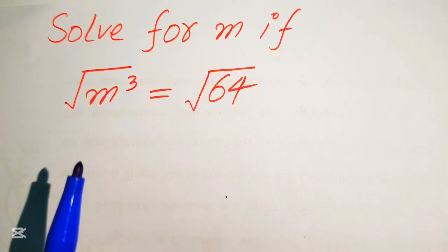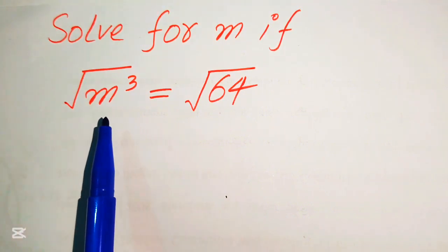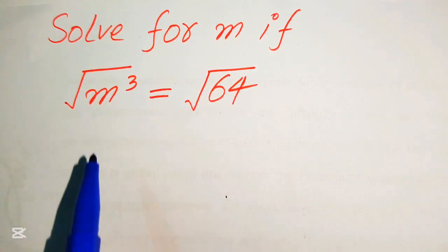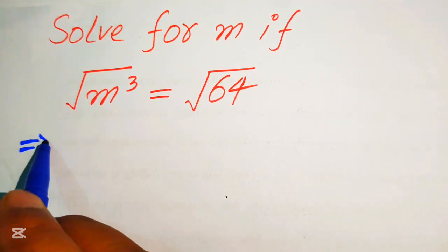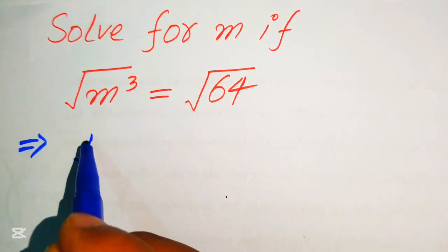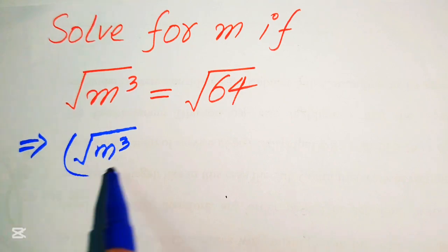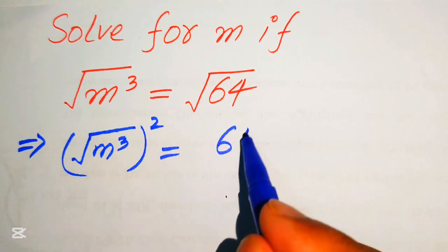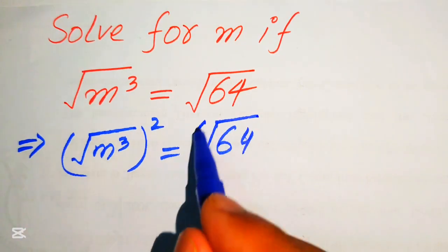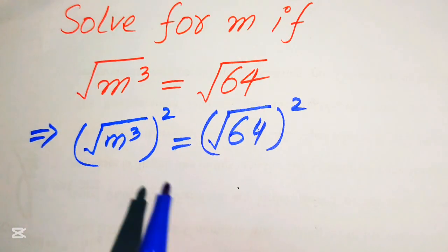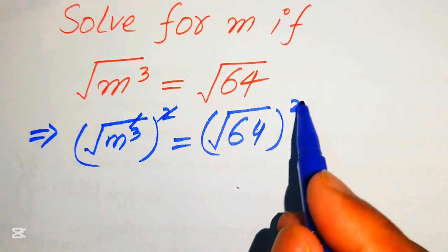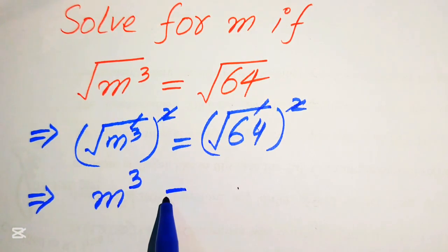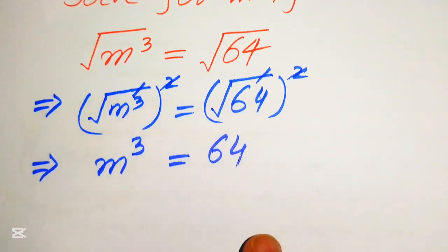First, in order to find the value of m, we need to eliminate the square root sign from both sides. To do that, we take the square on both sides. When we square both sides, the square root signs cancel, and we obtain m cubed equals to 64.